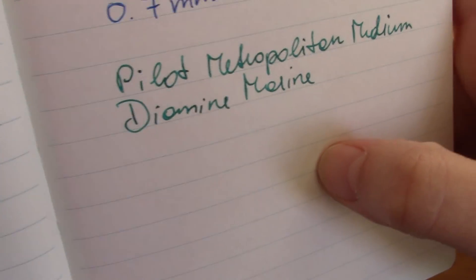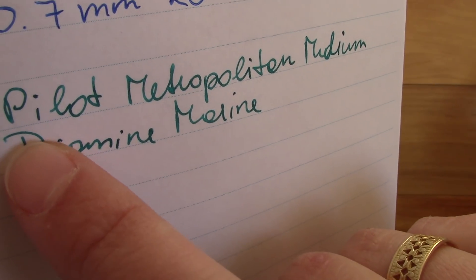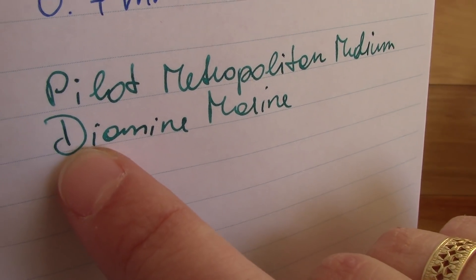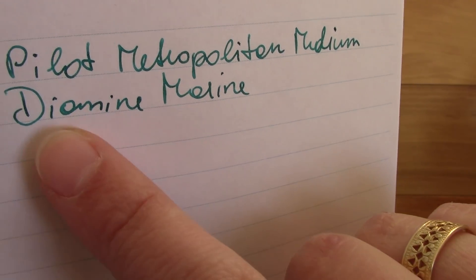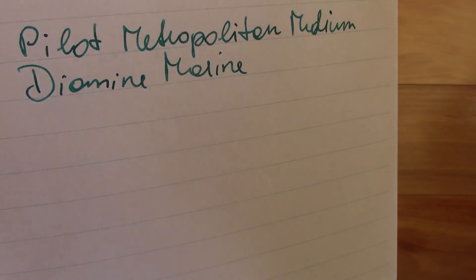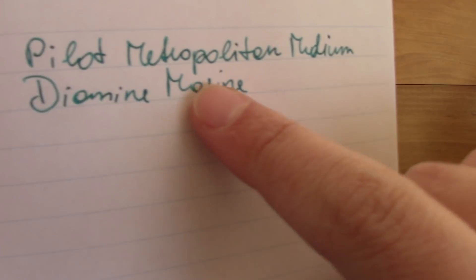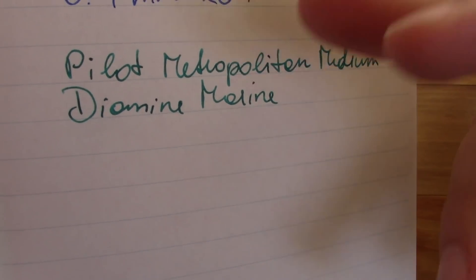And this paper creates really nice shading. I don't know if the camera picks this up, but there's some nice variation between the bottom and the top of the letters. You can see that it's darker at the bottom than it is at the top. So especially with a little bit wider nibs and different type of inks, you can just create really nice shading and variety with your ink on the paper.